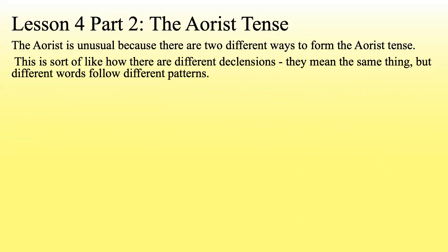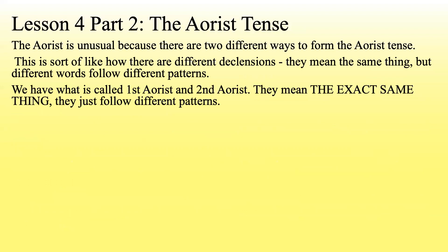The aorist is unusual in Greek because there are two different ways to form it — sort of like how there are different declensions. They mean the same thing, but different words follow different patterns. We have what is called first aorist and second aorist. They mean the exact same thing — get that in your head now. They just follow different patterns; some verbs follow one pattern, some follow the other. Both are the aorist tense; both are a simple past tense.